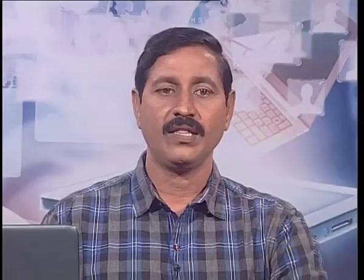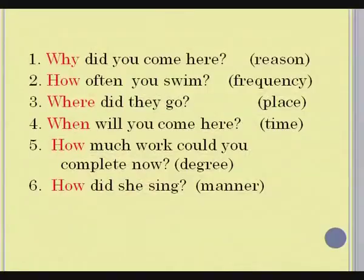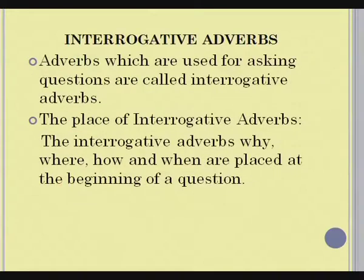They answer the question 'why.' The next type of adverbs are interrogative adverbs. Let us see some examples to understand what they are. Why did you come here? How often do you swim? Where did they go? When will you come here? How much work could you complete now? How did she sing? Adverbs which are used for asking questions are called interrogative adverbs. The interrogative adverbs why, where, how, when are placed at the beginning of a question.